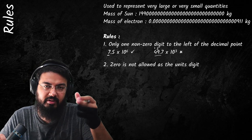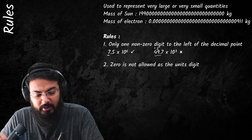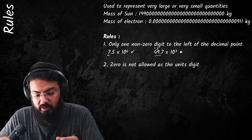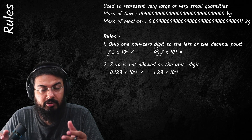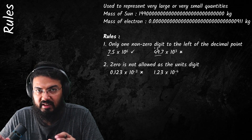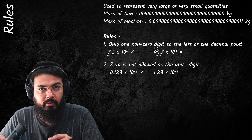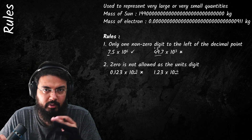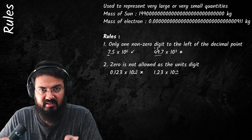The second rule is that zero is not allowed as the units digit — the one digit you have to the left of the decimal cannot be zero. So for example, 0.123 is wrong because zero is in that position, but 1.23 is fine. We'll discuss why the power minus 3 becomes minus 4 later in the conversion section.